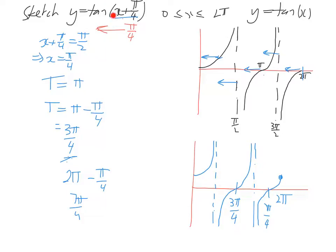Notice coefficient of x is 1. So our period is still t equals pi over 1, which is pi. So our period is still pi. It still takes pi for it to replicate itself.